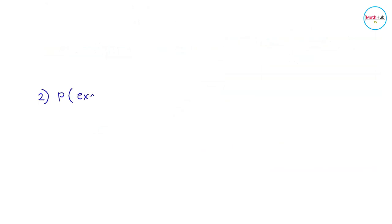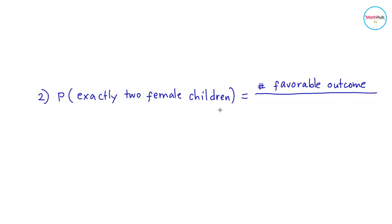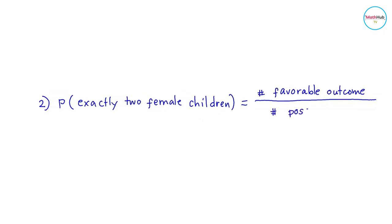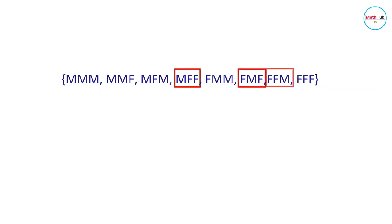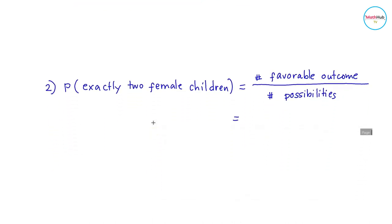Next, we find the probability of selecting a family with exactly two female children. This can be computed by finding the number of favorable outcomes divided by the total number of possibilities. Counting outcomes with exactly two female children gives us three favorable outcomes. So the probability is equal to three over eight.